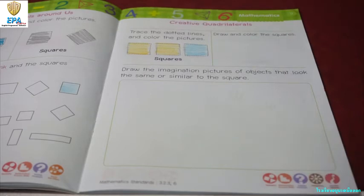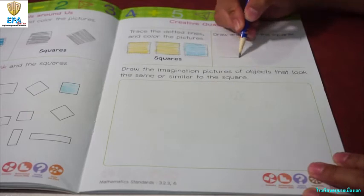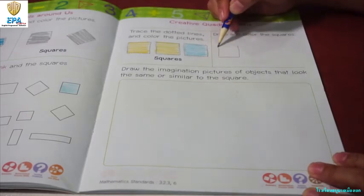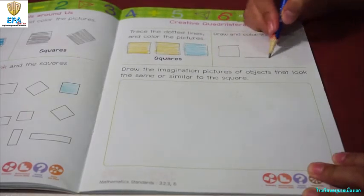Next, draw and color the squares. I'm going to make three squares and I will color it after.